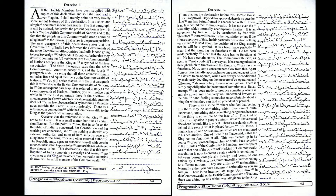You will notice that while in the first paragraph this is referred to as the British Commonwealth of Nations, in the subsequent paragraph it is referred to only as the Commonwealth of Nations. Further, while in the first paragraph there is the question of allegiance to the crown which exists at present, this question does not arise later because India by becoming a republic goes outside the crown area completely.